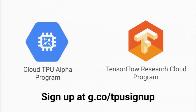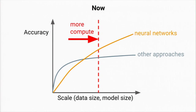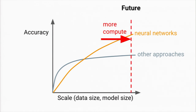If you're interested in learning more, feel free to sign up on the mailing list at g.co/tpusignup. To summarize: this red dotted line represents where we are today with neural networks just starting to break through above other handcrafted approaches. With TensorFlow, with Cloud TPUs, and with numerous other initiatives, we're hoping together we can push this line forward and create more product and research breakthroughs.